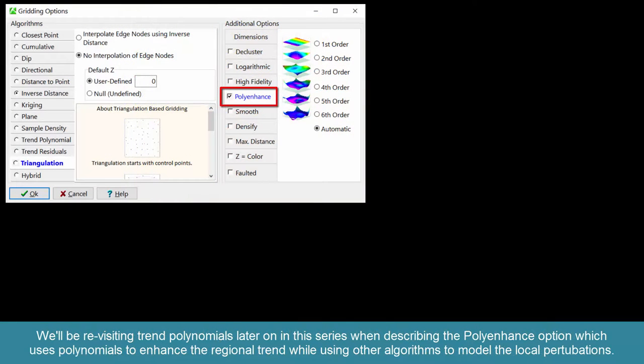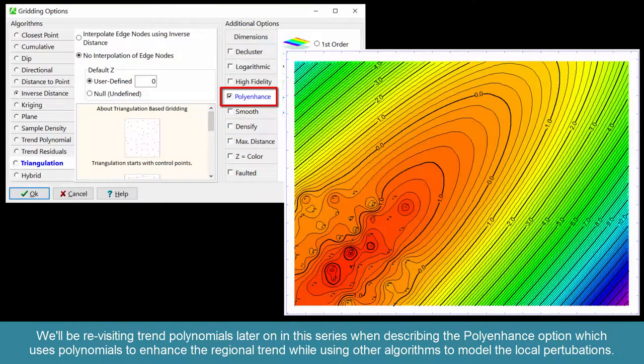We'll be revisiting trend polynomials later on in this series when describing the polyenhance option, which uses polynomials to enhance the regional trend while using other algorithms to model the local perturbations.